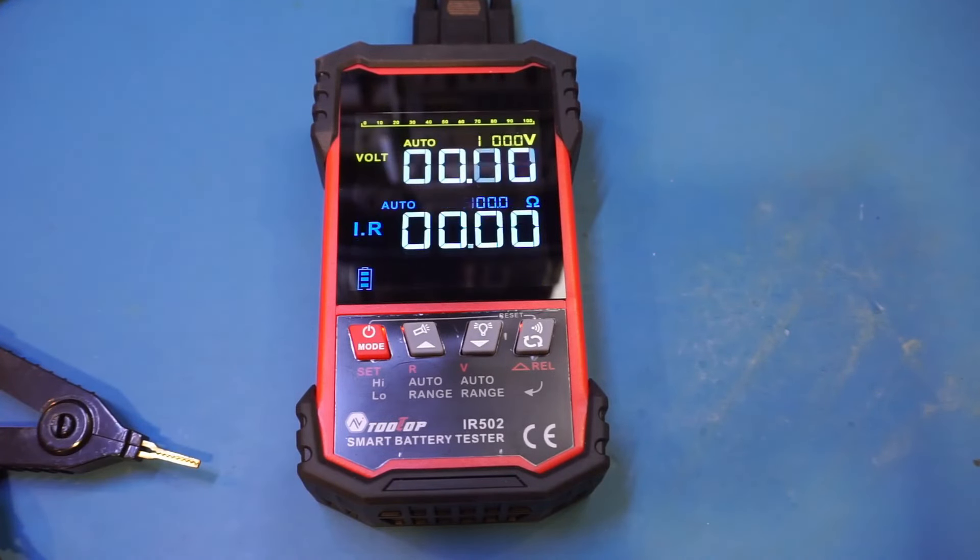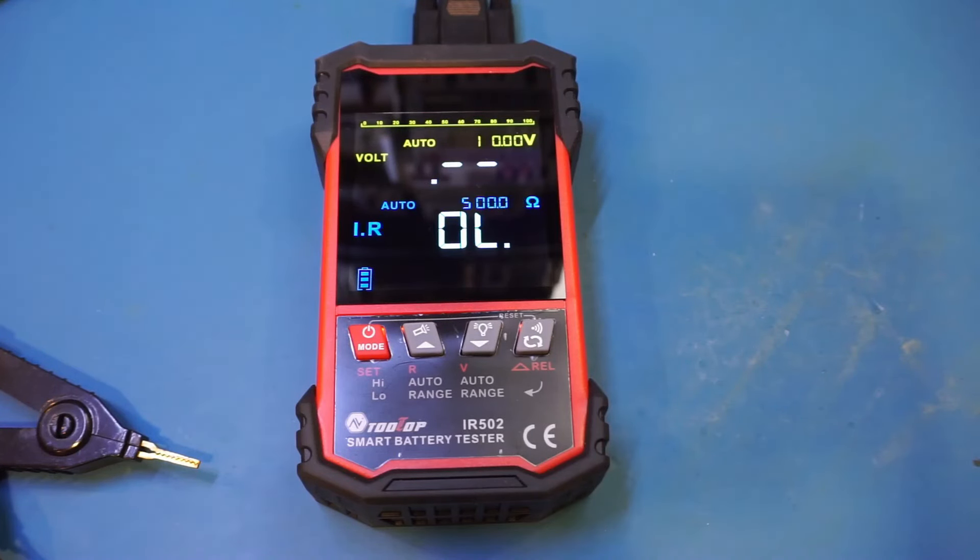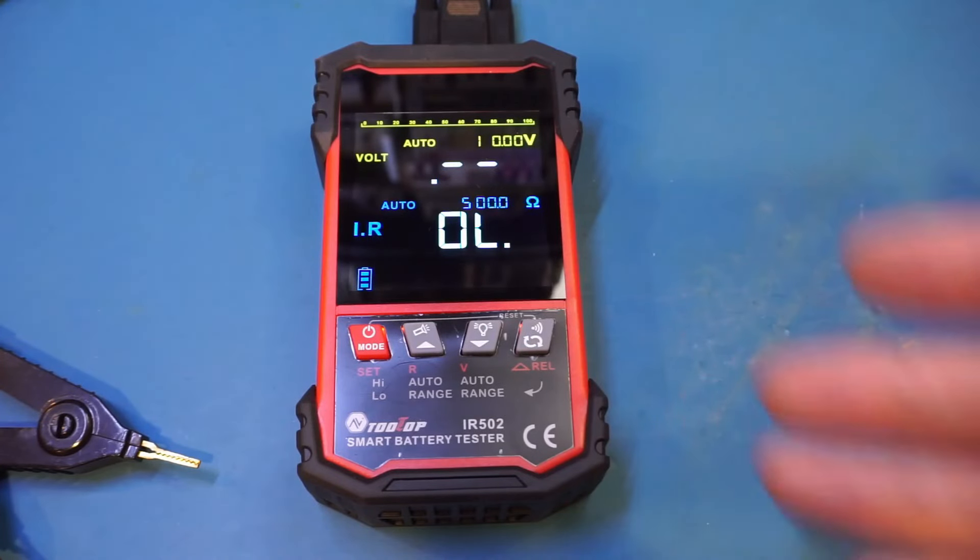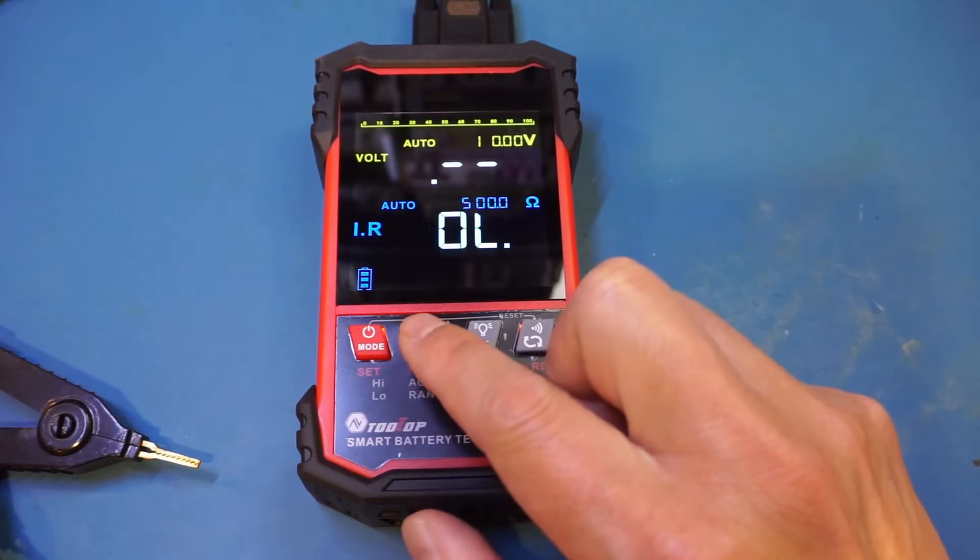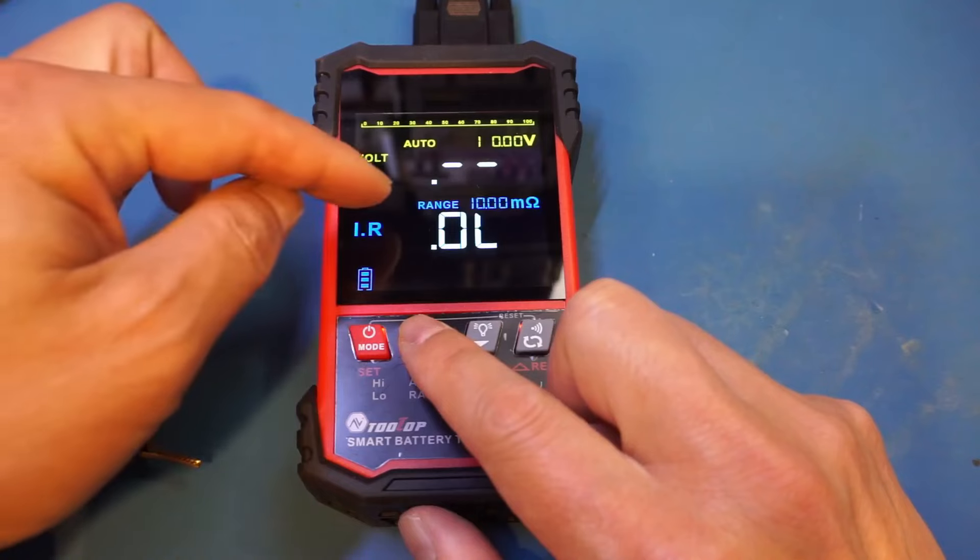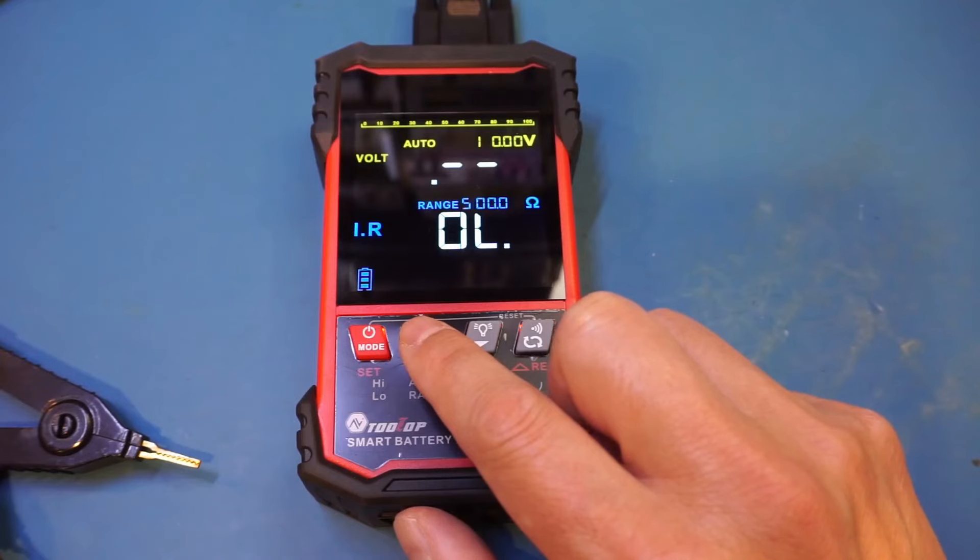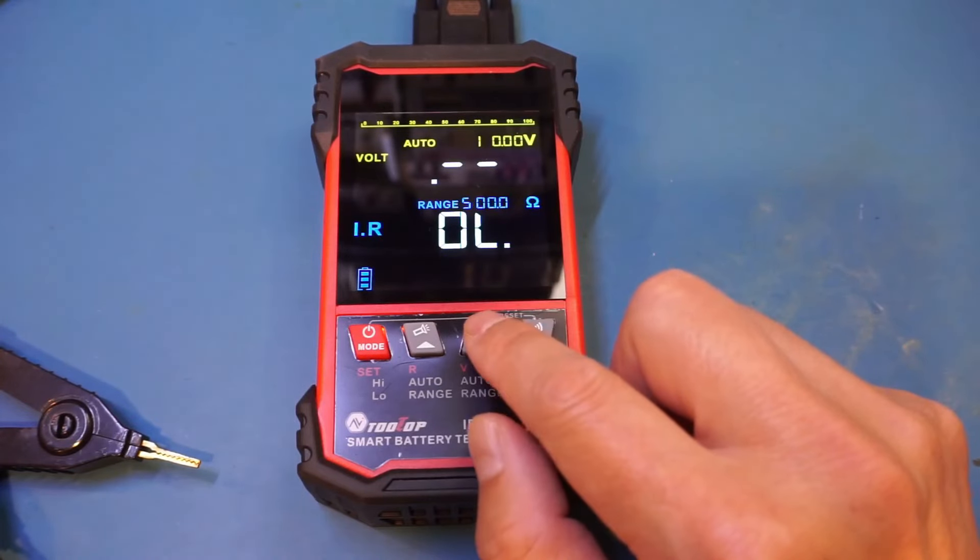The manual was a little bit confusing, but I think I finally understood how this meter is supposed to work. Although the manual was confusing, the user interface is actually quite intuitive. When we powered up, we are in automatic mode, so we can start measuring right away. If you want to change the ranges, you can press these two buttons. This one controls the resistance range - you can see now we're in 10 milliohms, 100 milliohms range.